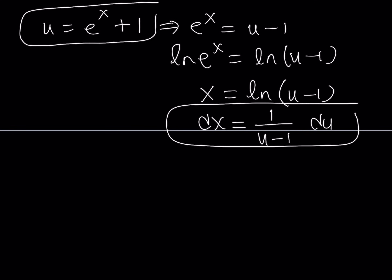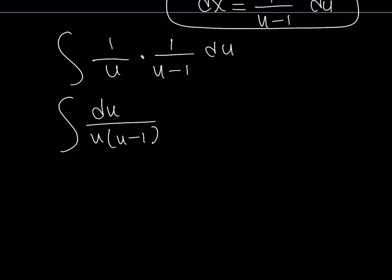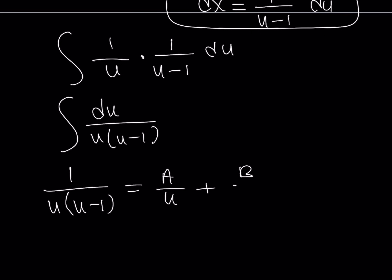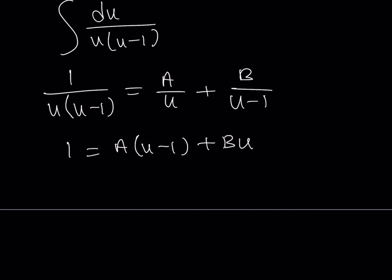Replacing dx and eˣ+1 with u gives us 1 over u times 1 over (u minus 1) du, which we can write as du over u(u minus 1). This integral can be evaluated by partial fractions. I'm going to separate 1 over u(u minus 1) into two fractions — A over u plus B over (u minus 1) — and our goal is to find the values of A and B. Making a common denominator gives A(u minus 1) plus Bu.